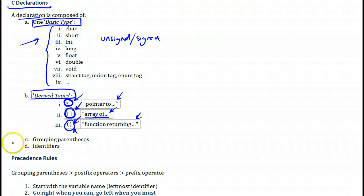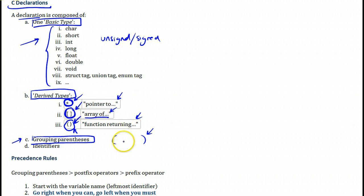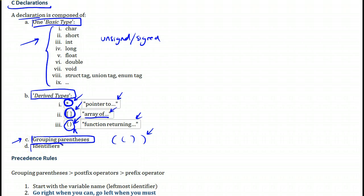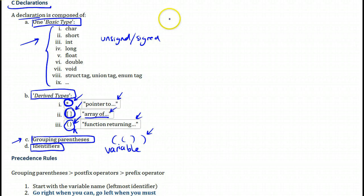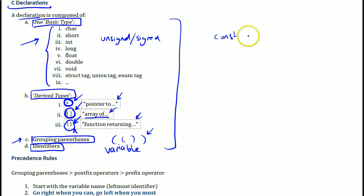Then you could also have within your declaration some grouping parentheses — parentheses that either help to see things more clearly or sometimes achieve a purpose in terms of ordering. We will look at how grouping parentheses are used in declarations. Finally, you could also have some identifiers. We will always have one identifier that is the variable name, and then we might have other identifiers as well. You might also have type qualifiers like const and volatile, which we will also learn how to read.